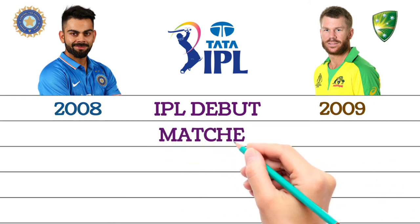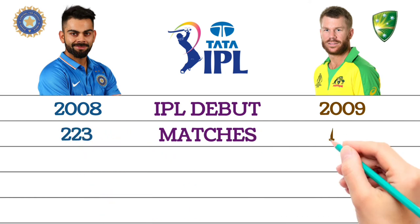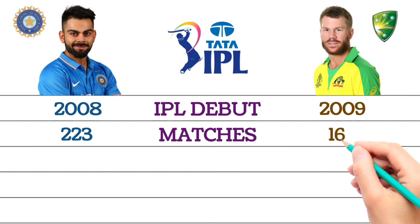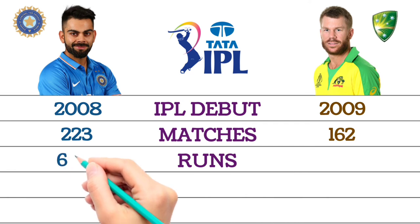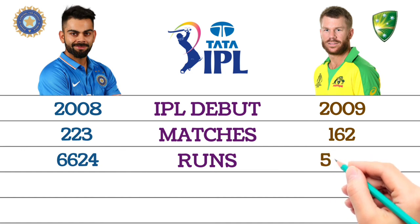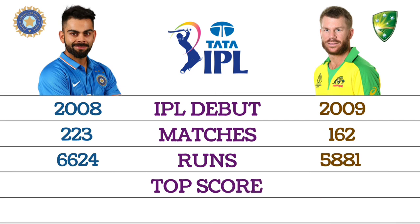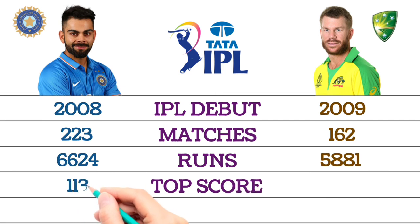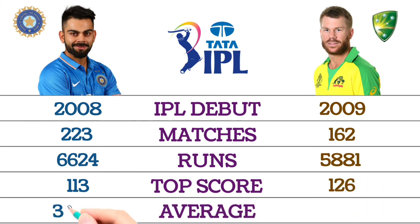IPL career — IPL debut: Virat Kohli debuted in 2008, David Warner debuted in 2009. Total matches: Virat Kohli 223 matches, David Warner 162 matches. Total runs: Virat Kohli 6,624 runs, David Warner 5,881 runs. Top score: Virat Kohli 113 runs, David Warner 126 runs.